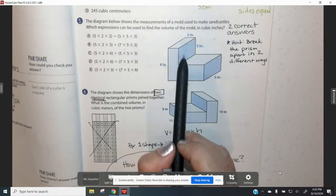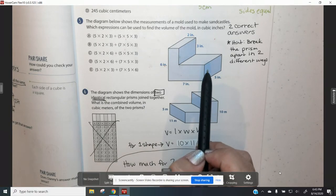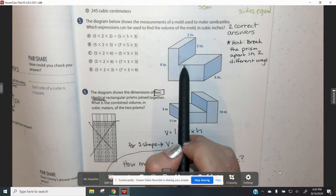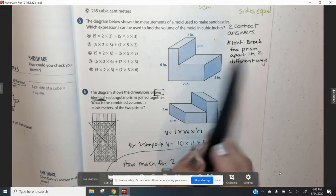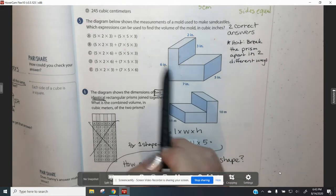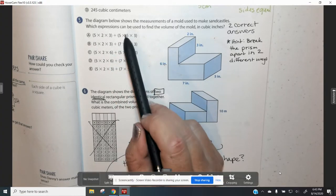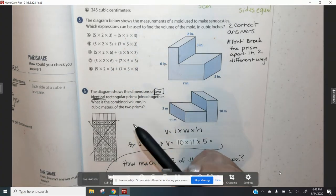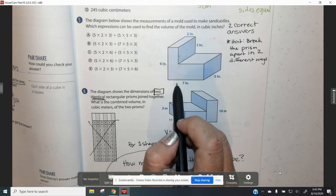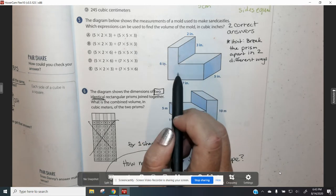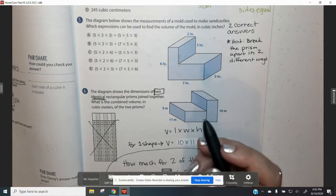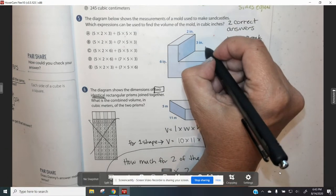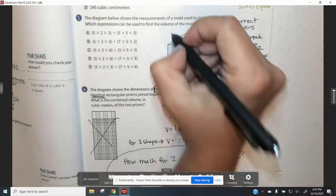For number five, this diagram can be cut apart in two different ways. You can cut it across here or you can cut it up and down here. You're going to need to break it apart in two different ways to find the correct answers. Two of these answers are correct. So you probably are going to want to do this one in pencil so that you can do lots of erasing. But I know that you will be able to do it. Let me go ahead and help you out and give you a couple of side lengths.